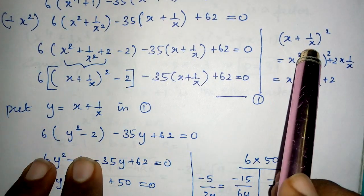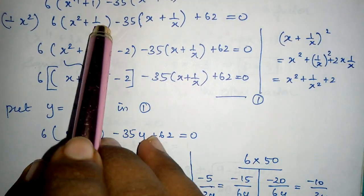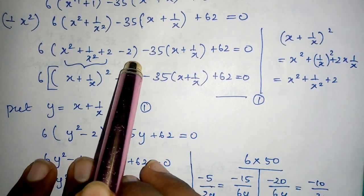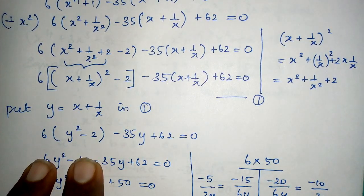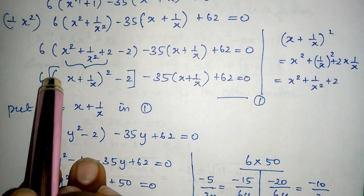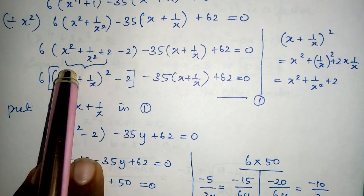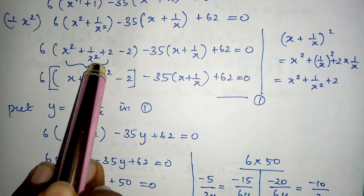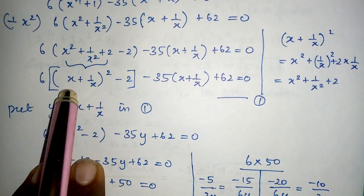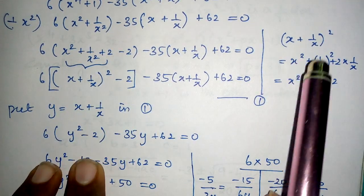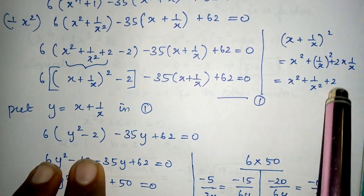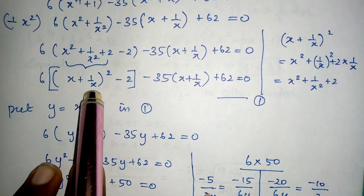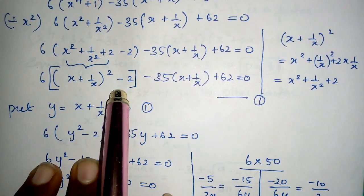To make this term as (x + 1/x)², I need a 2 here. So I am adding a 2 and subtracting a 2. This is now the (a + b)² formula expansion. So in this place I have substituted (x + 1/x)². This -2 is left as it is. The bracket is very much important.